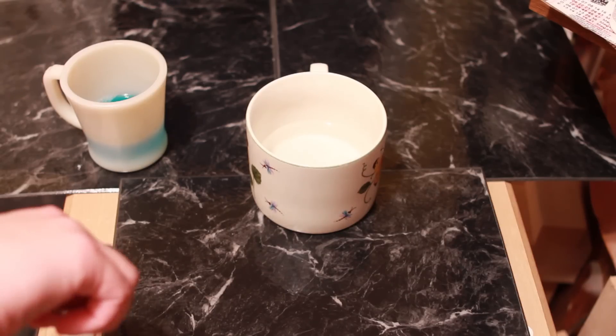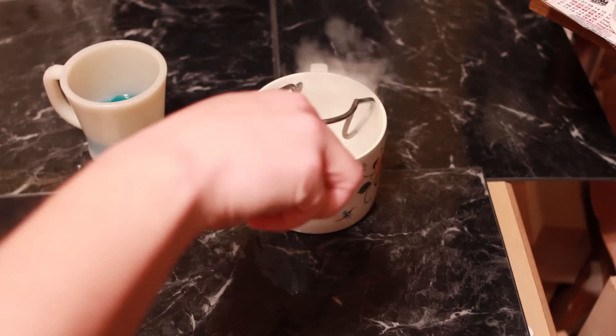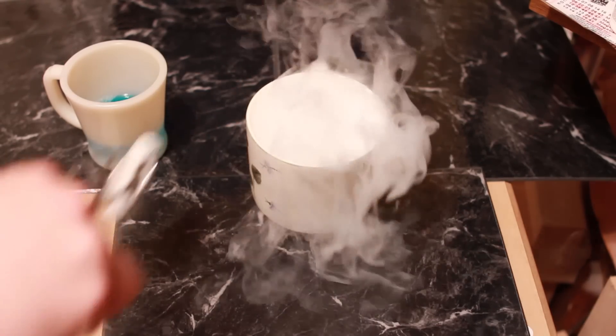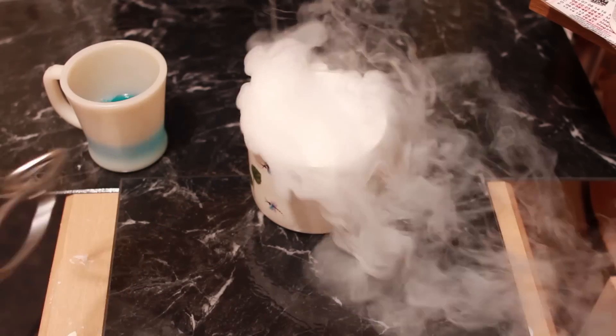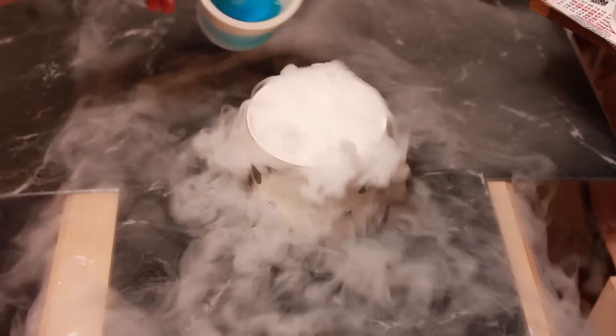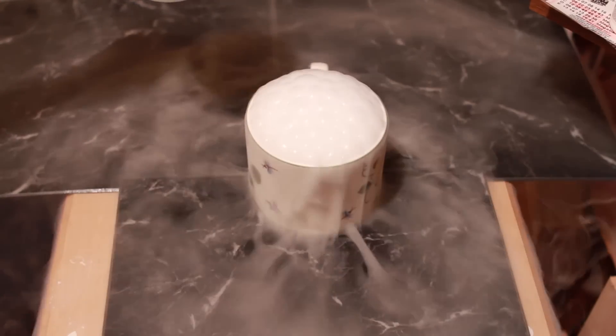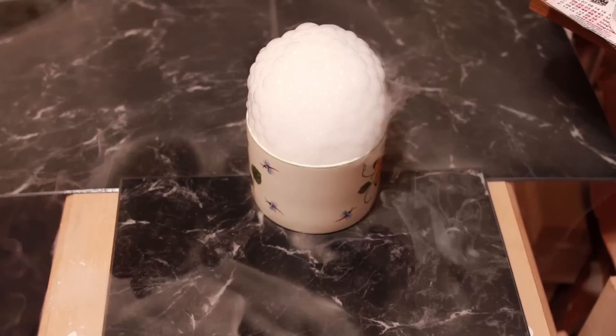So what we do is add our dry ice. Remember, never touch it. Got a lot of good smoke going there. We're going to add just a little bit of dish soap until we get our bubbles. There we go. Perfect.